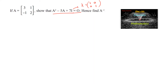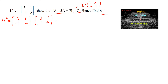We need to first show that A squared minus 5A plus 7I equals 0, then find A inverse. Let us compute A squared equals [[3,1],[-1,2]] multiplied by [[3,1],[-1,2]]. Multiplying row by column: first row, first column gives 3×3=9 and 9 minus 1 is 8. First row, second column: 3×1=3 plus 2 gives 5. Second row, first column: -1×3=-3 and -3 minus 2 gives -5. Second row, second column: -1×1=-1 plus 2×2=4, so 4 minus 1 is 3.